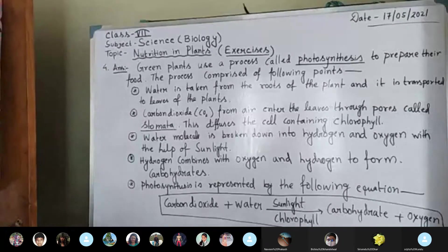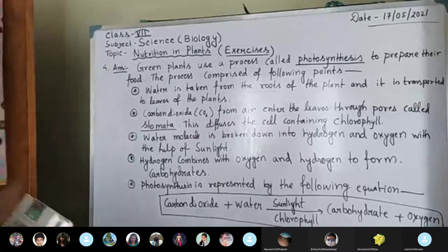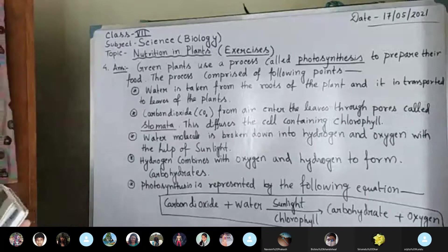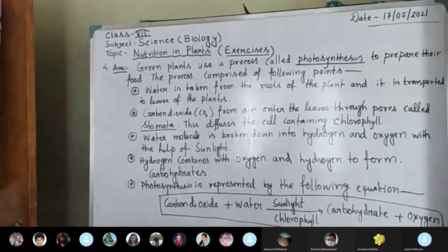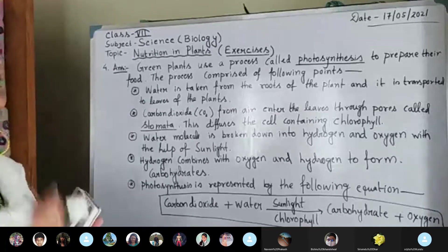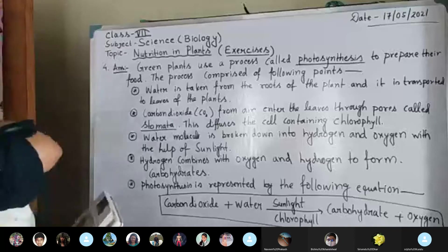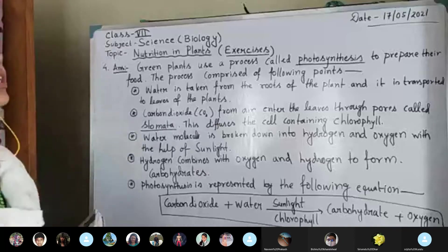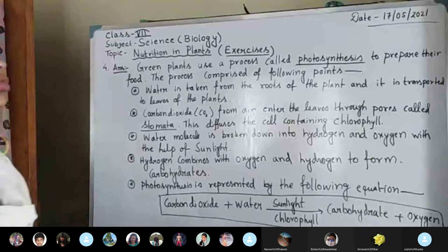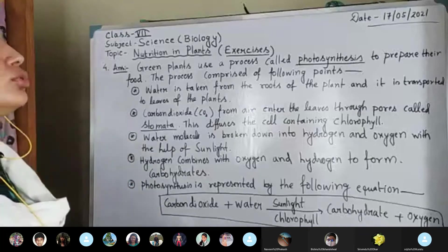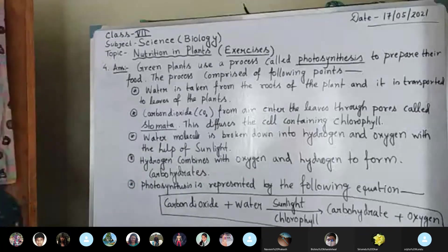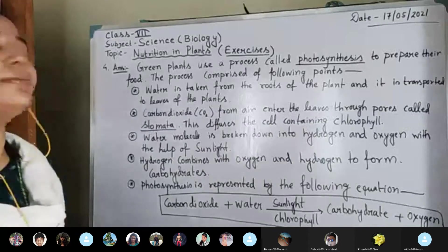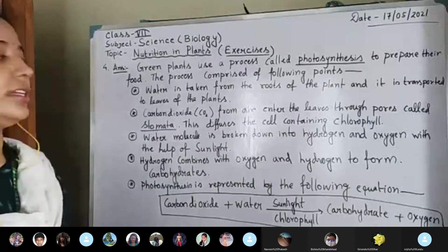Green plants use a process called photosynthesis to prepare their food. The process comprised the following points. First, water is taken from the roots of the plants — there are some tube or pipe-like structures through which the water is taken from the roots and transported to the leaves of the plant.